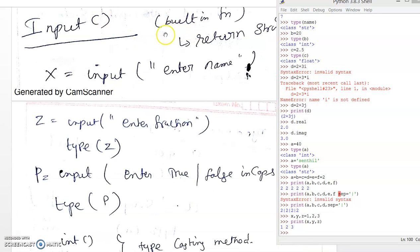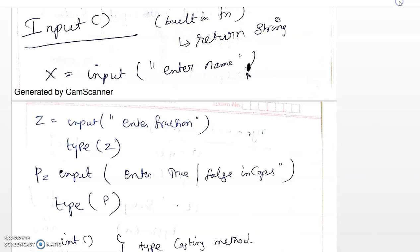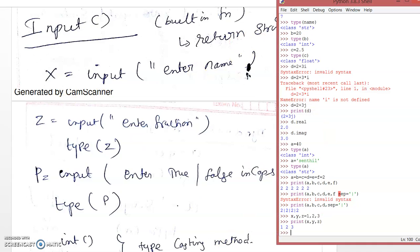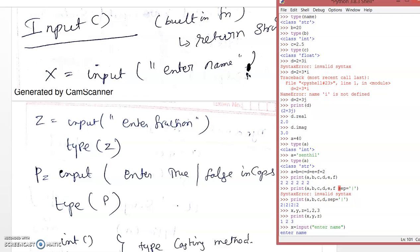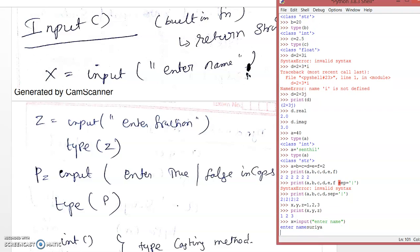Now we are going to talk about the input() function, which is also a built-in function. Whatever the user enters via the keyboard, it will always be treated as a string in Python. For example: x = input('Enter name:'). The user enters 'Surya'. It will be stored and treated as a string. We can verify by checking type(x) — it shows string.